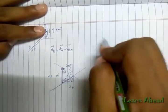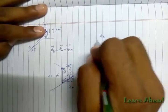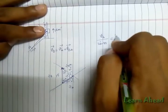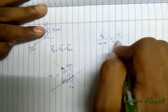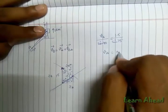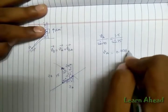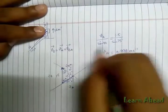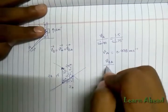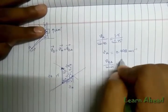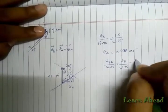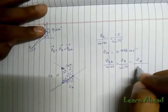So I will apply sin law, which says that VA over sin of 40, the opposite angle, equals VB, that is 1.5, over sin of 75, the opposite angle. So from here, VA will be known: 0.998 meters per second. And again, by using this relation, I can calculate VBA, because VBA upon sin 65 equals VB upon sin 75 equals VA upon sin 40.